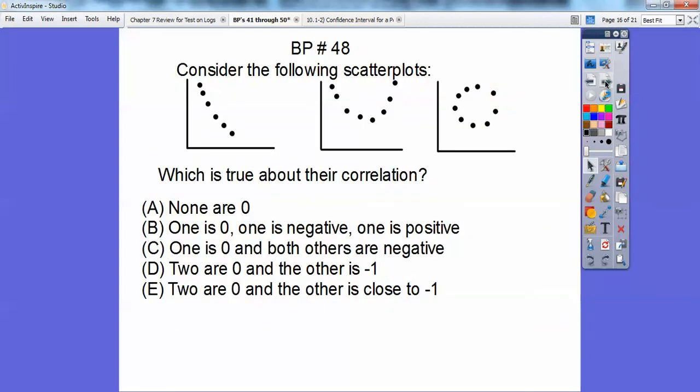Consider the following scatter plots. Which is true about their correlation. None or zero? Well, this one's probably zero and this one's probably zero. This one is probably not zero. This one's probably close to negative one because they're pretty linear right here. So let's see. This one says one is zero, one is negative one. That's not that one. One is zero and both the others are negative. It's not that one because these two are zeroes, I would say. So two are zero and the other is negative one or two are zeroes, the other one is close to negative one. It must be choice E. I don't think it's exactly one. I think it's close to negative one.